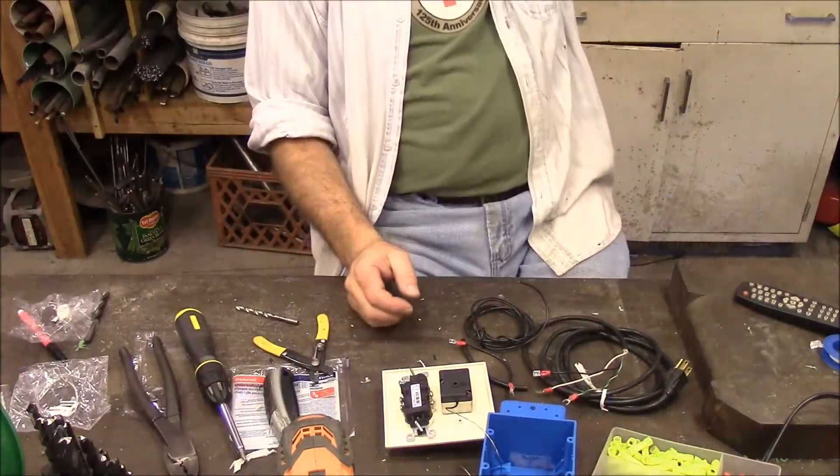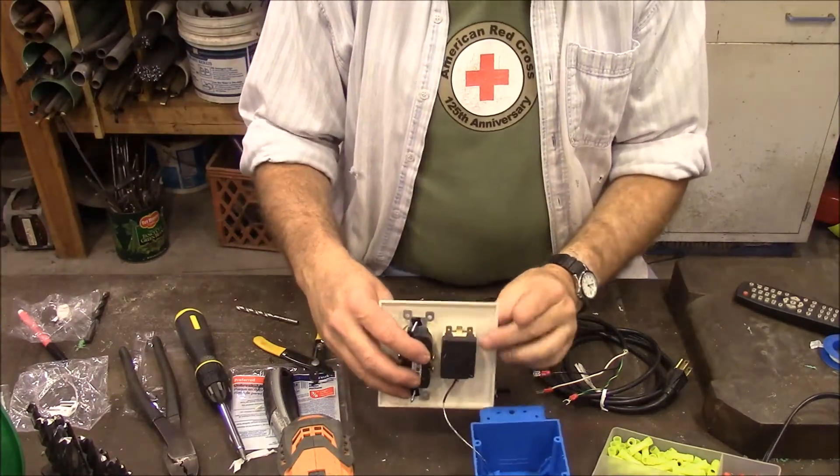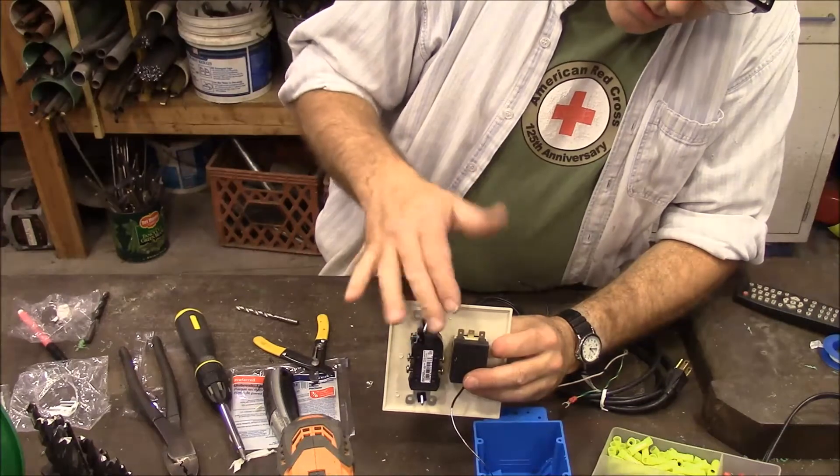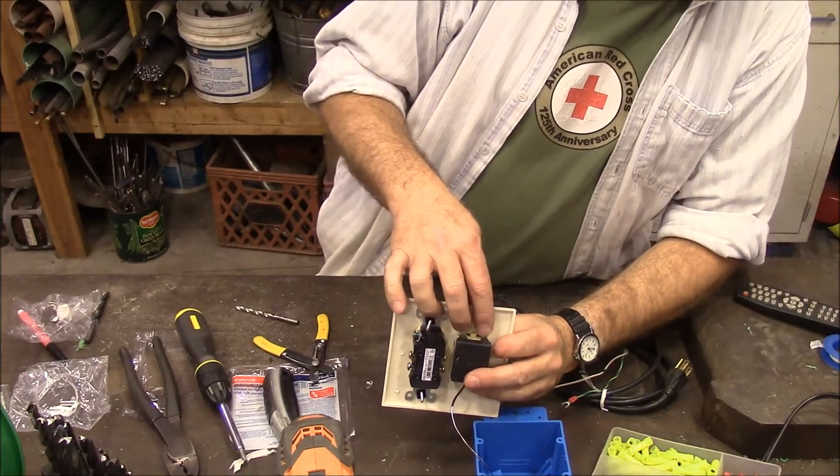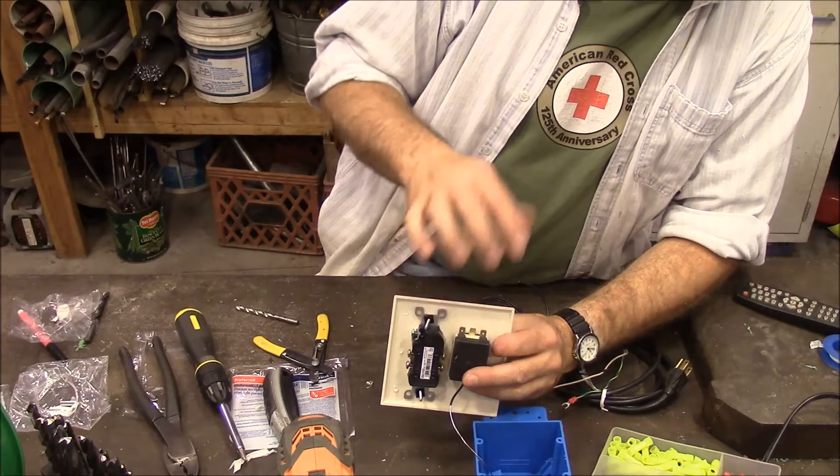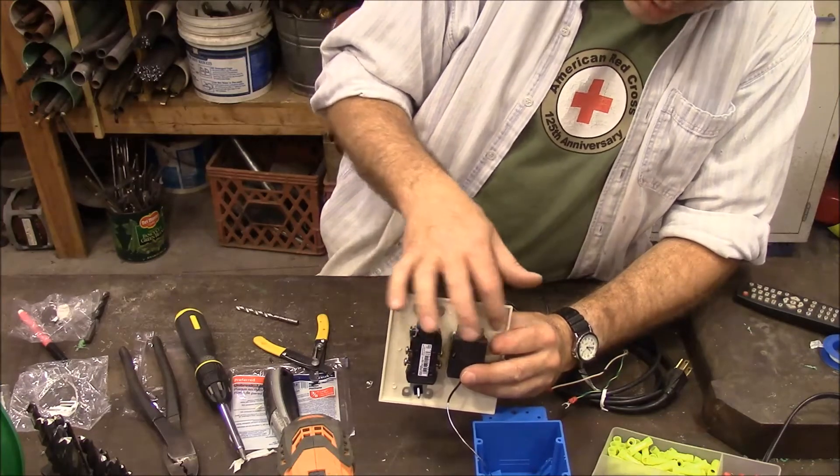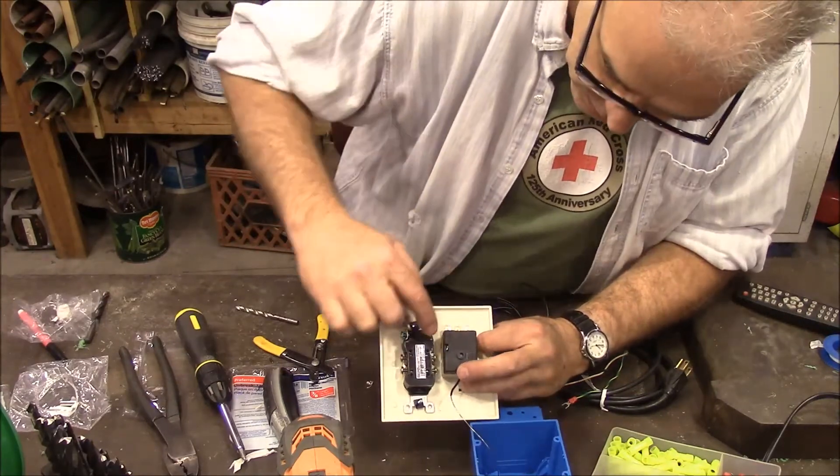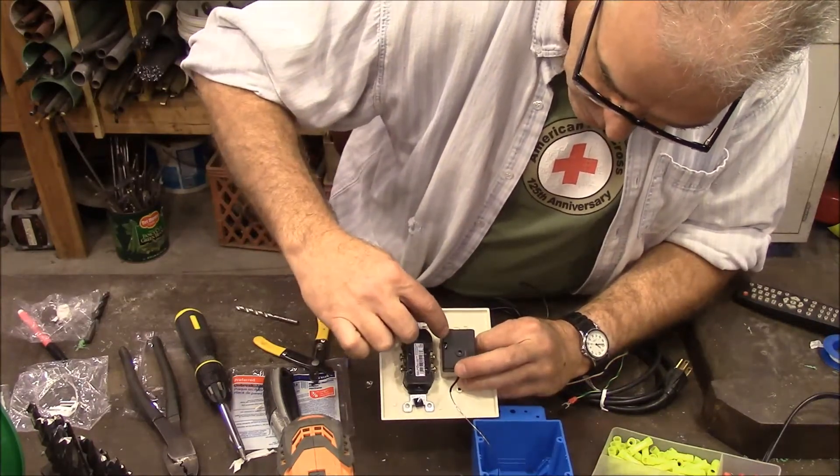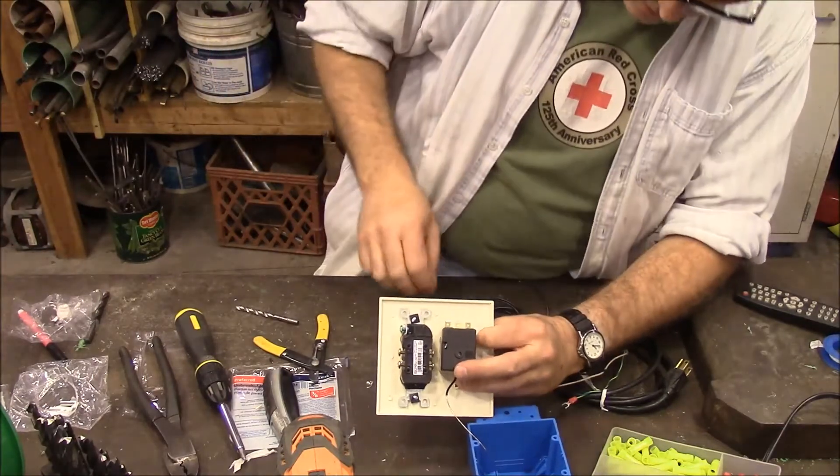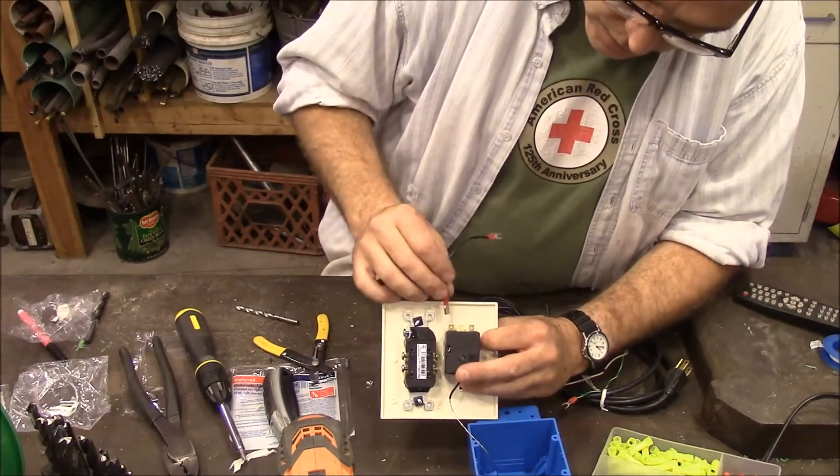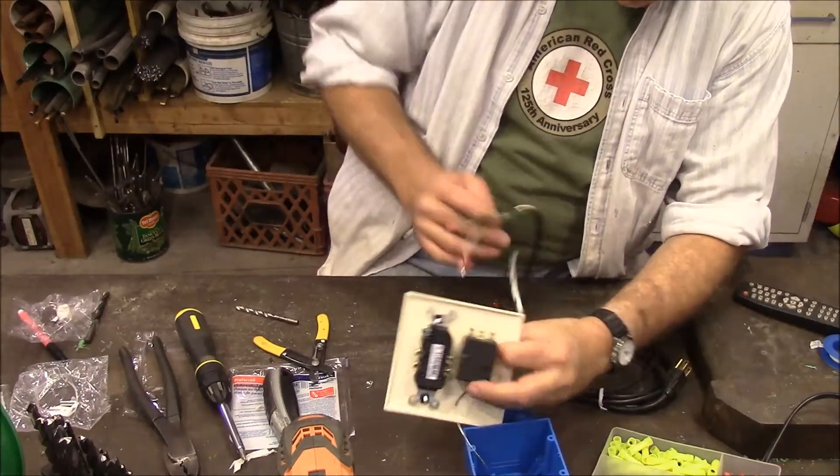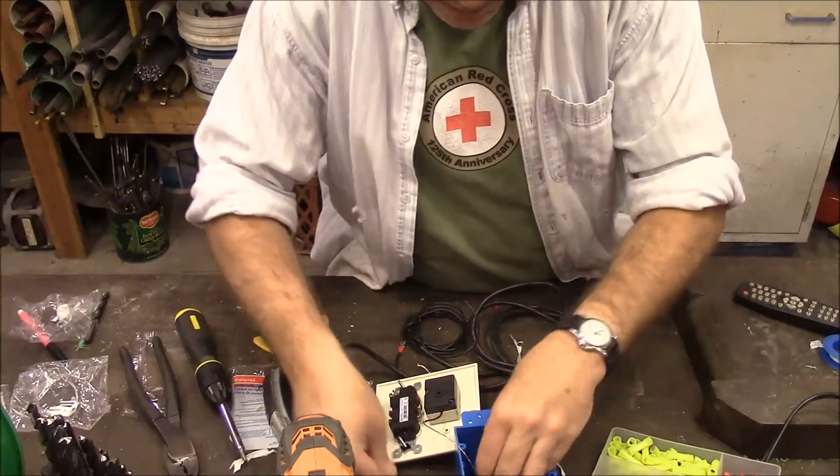Now let's get this wired up. On this particular switch, we're going to use the outside. This is made so that it will either close the connection when it gets to the right temperature, or it will open the connection when it gets to the right temperature. We want it to close the connection, like flipping a switch on. So we're going to use the two outer ones, and there's a little bit of a schematic here that shows you the difference.